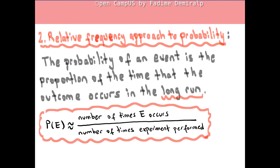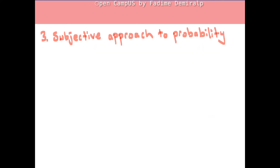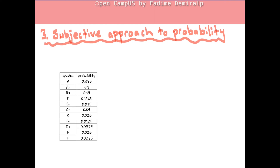So far we had the classical approach, which is suitable for chance experiments with equally likely outcomes, and the relative frequency approach, which is based on observing the outcomes of a chance experiment. The subjective approach to probability is the last one to review. In the subjective approach, the probability represents an individual's judgment reflecting personal evaluation. To give an example, I might provide the following subjective probabilities for your course grade in Eco 4000. Each probability in the distribution represents my judgment based on some facts with my personal evaluation.